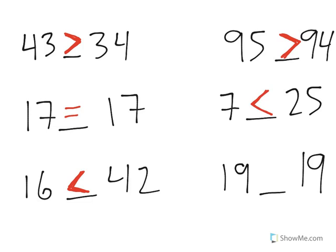And last, 19 and 19. Those two are the same number. That means that they are equal to one another.